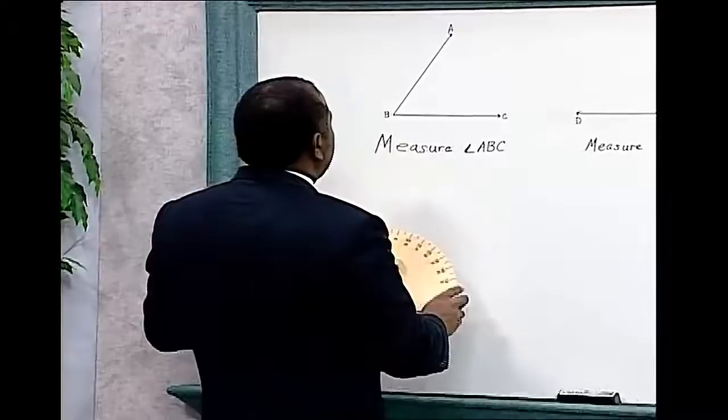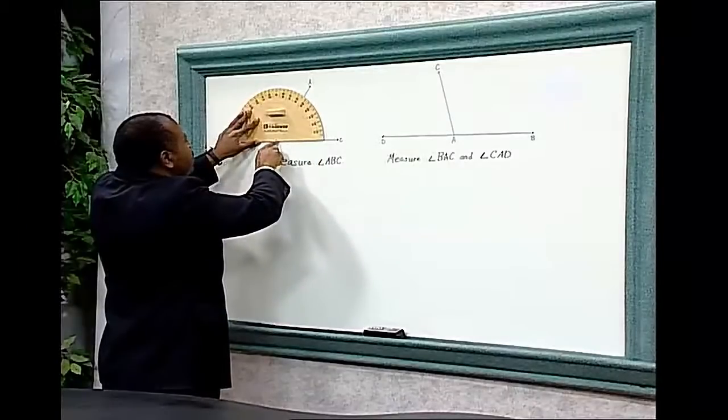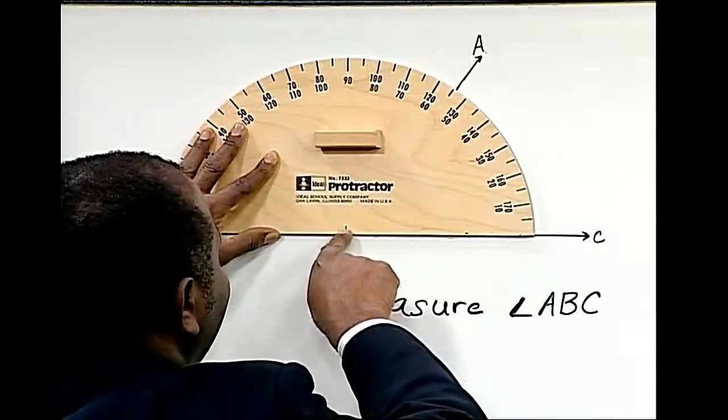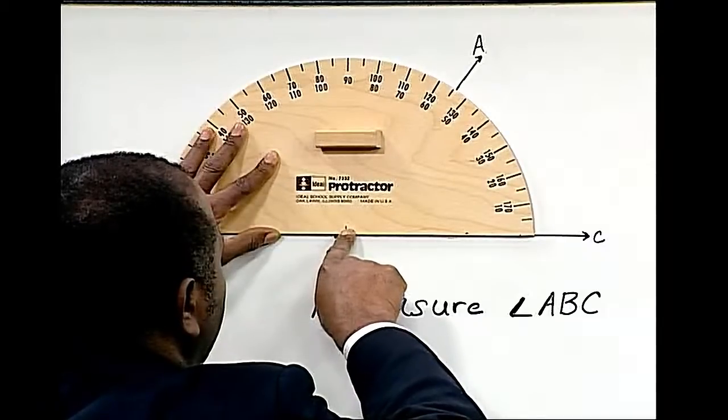In order to measure angle ABC, we place the center of the protractor on angle B, which is the vertex.